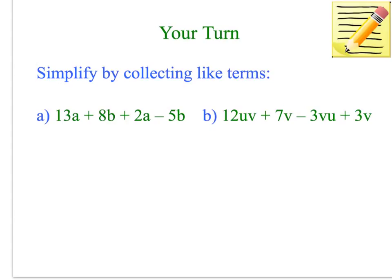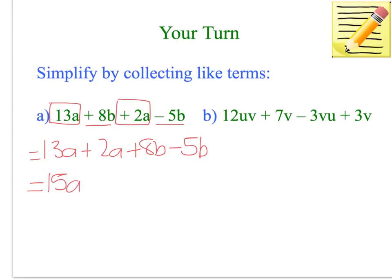Remembering the first step is identifying the like terms. So I've got 13a plus 2a, they're like terms, and then these two are like terms. So I'm going to rewrite it. 13a plus 2a plus 8b minus 5b equals 13a plus 2a is 15a, plus 8b minus 5b is 3b. That is our answer. Hopefully you got this same answer.